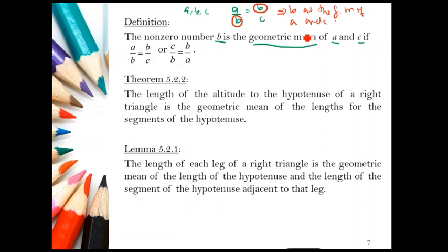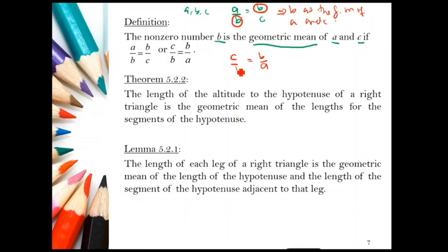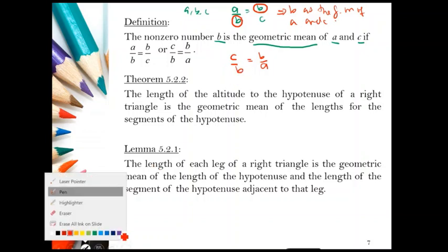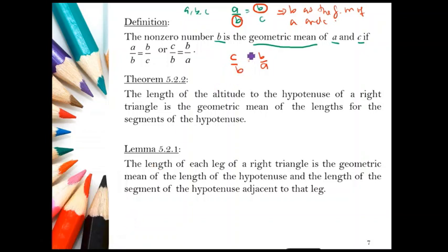We have another representation as well: C over B equals B over A. Again, B appears on the lower part on one side and the upper part on the other side, confirming B as the geometric mean.